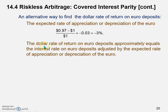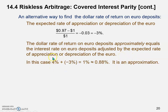The dollar rate of return on euro deposits approximately equals the interest rate on the euro deposit adjusted by the expected rate of appreciation or depreciation of the euro. In this case, the euro deposit offers 4%, and adjusting for the minus 3% depreciation, we end up with approximately 1%. On the previous slide we calculated precisely 0.88%, so this approximation is close enough. Once again, it is an approximation.